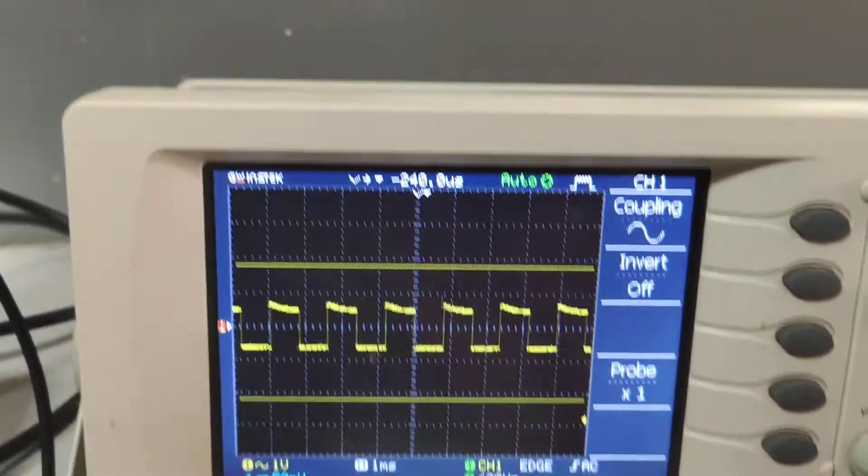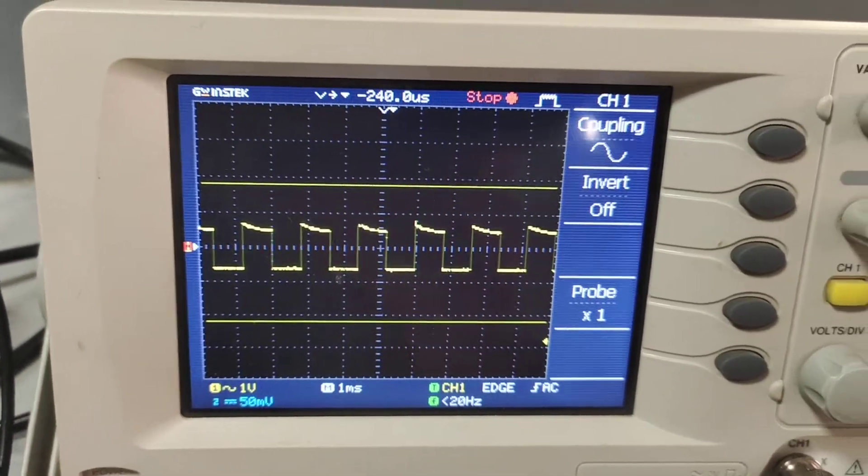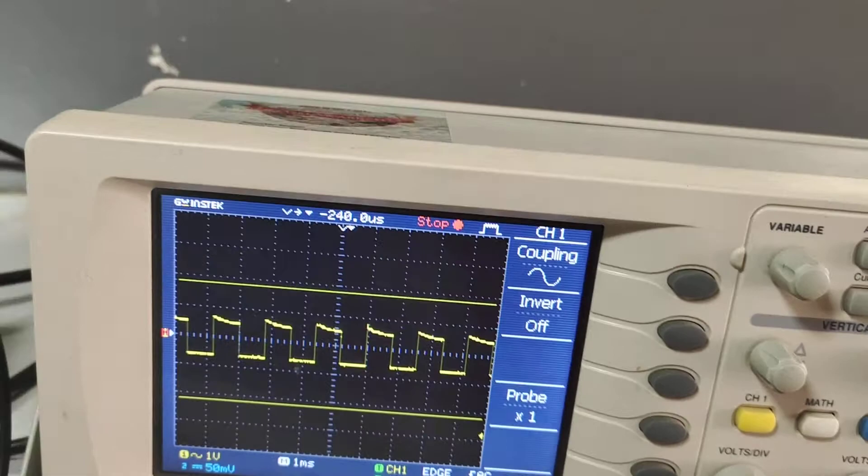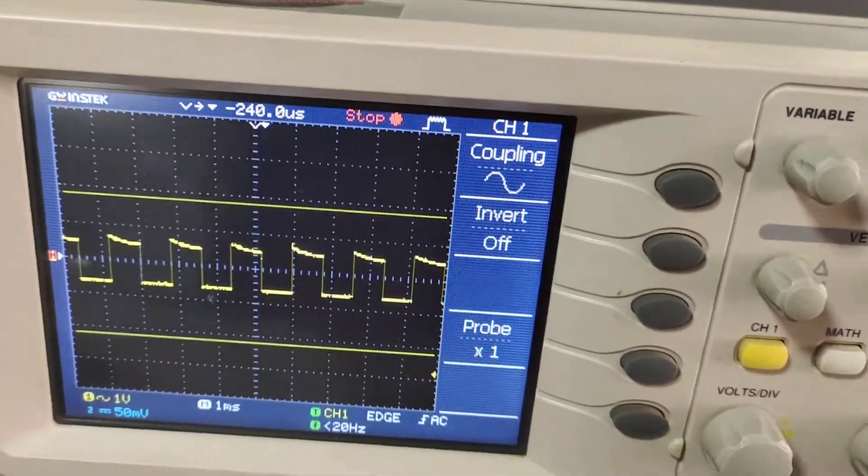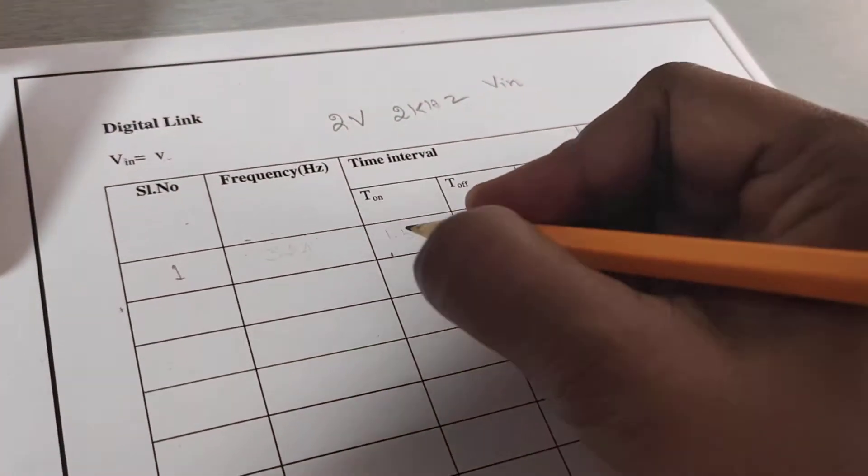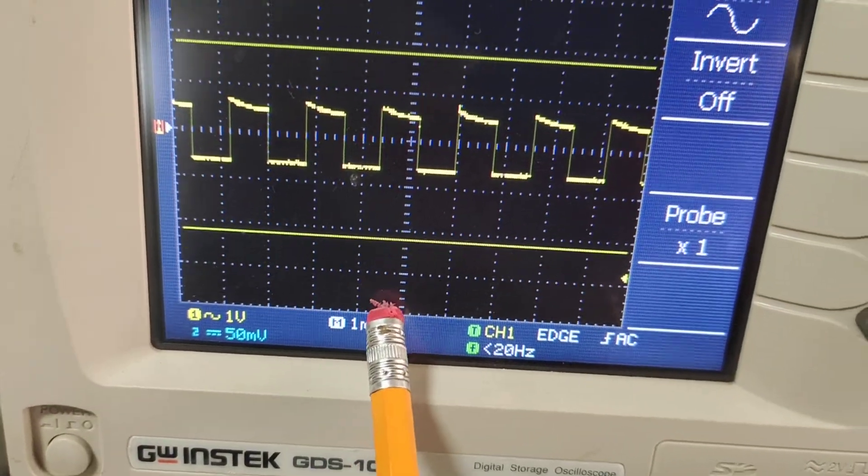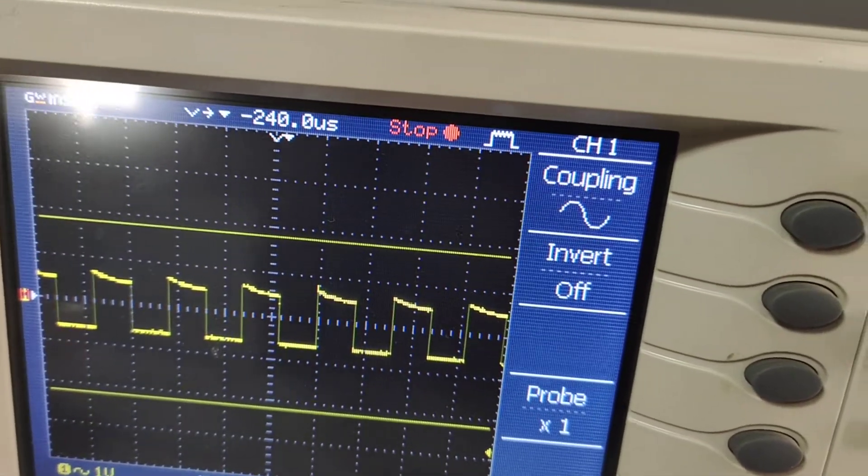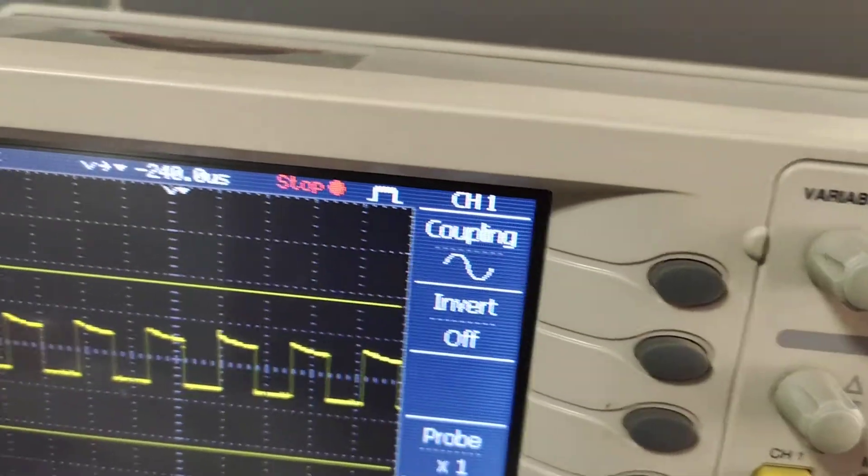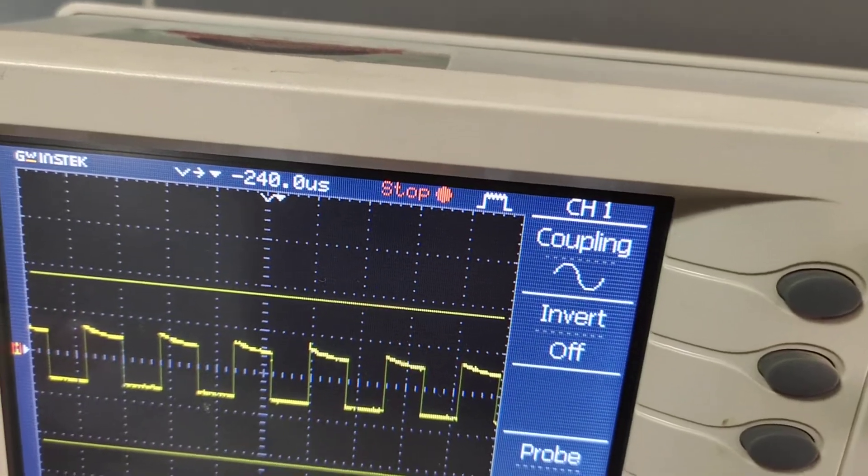So, we measure T on and T off. T on and T off is 0.8 millisecond. 0.8 millisecond and T off is also 0.8 millisecond.